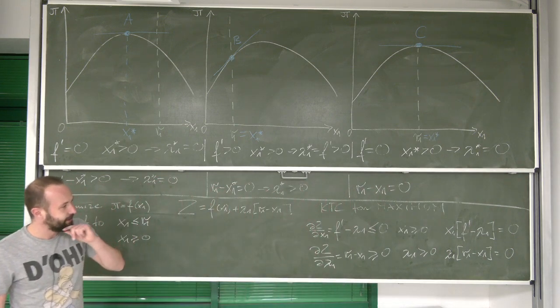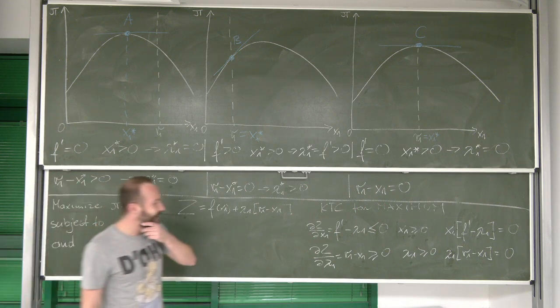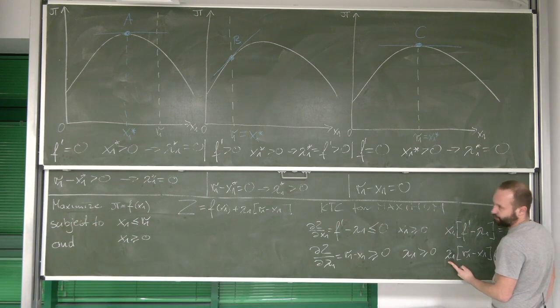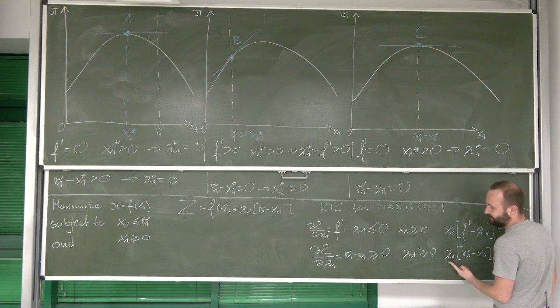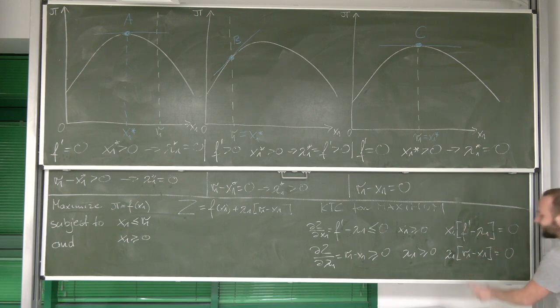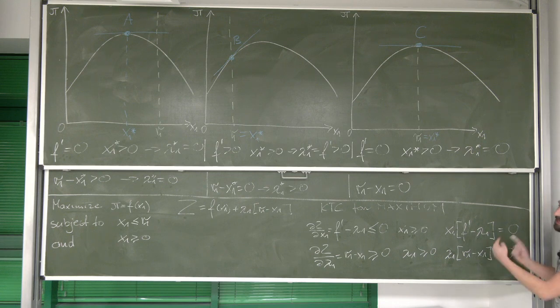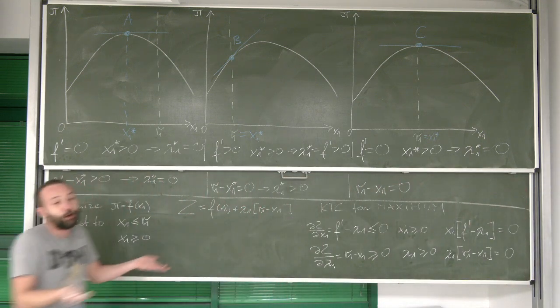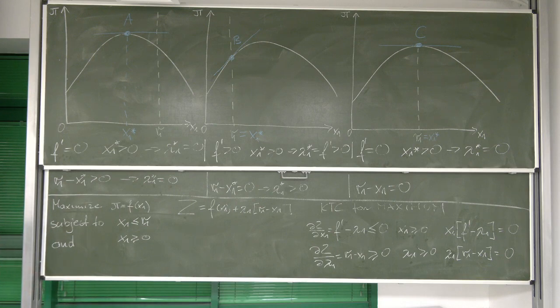And this actually implies that lambda doesn't need to be equal to zero. However, when we talk about complementary slackness, it means that at least one of them needs to be equal to zero. And in this special circumstance, they're both. They're both equal to zero.